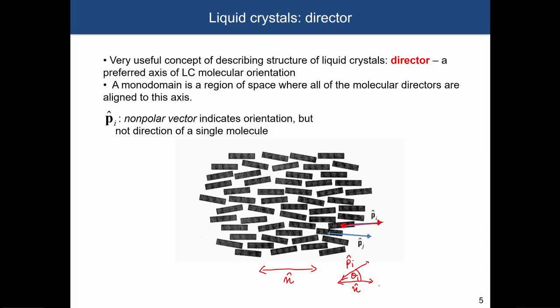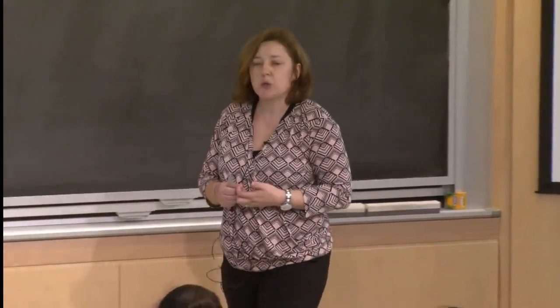We introduced a concept called the director, which describes the orientational order of molecules in liquid crystalline materials. The nonpolar vector n̂ tells you the orientation of an individual molecule in the liquid crystal. If you look at long range and average over time, all of these molecules will be aligned in a preferential direction — that preferential direction is defined as the director, a nonpolar vector representing the average orientation of the molecules.